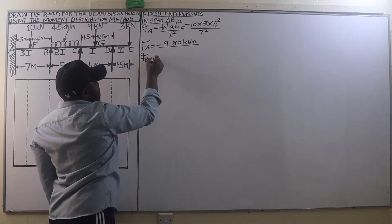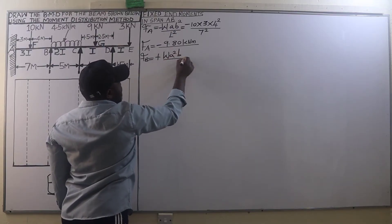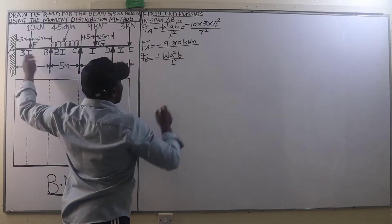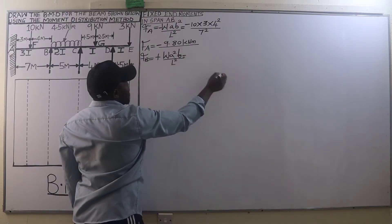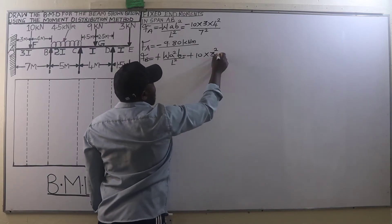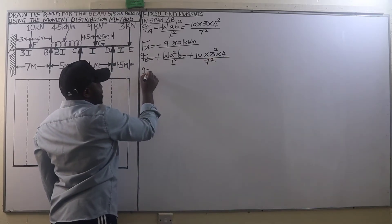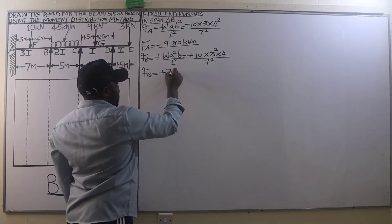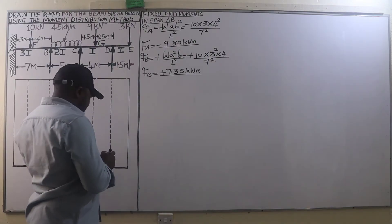The fixed end moment at B is given by positive W·A²·B divided by L². As a reminder: when determining the fixed end moment at A we square B, and when determining the fixed end moment at B we square A. This gives us positive 10 multiplied by 3 squared, multiplied by 4, divided by 7 squared, giving a fixed end moment at B of positive 7.35 kN·m.